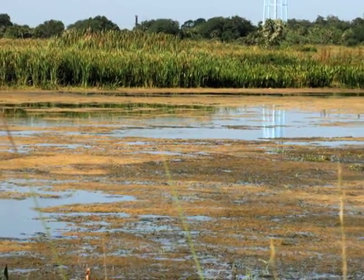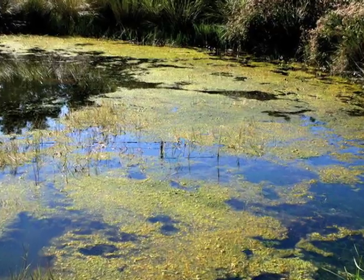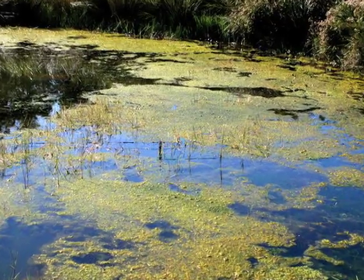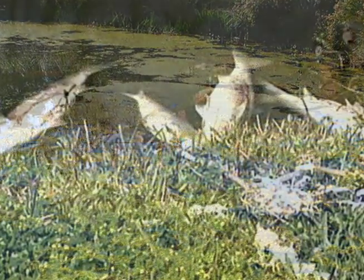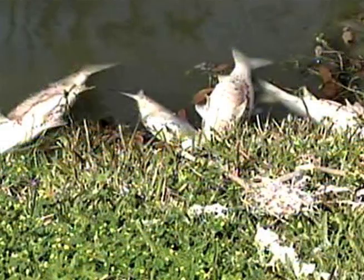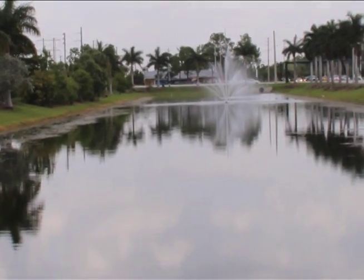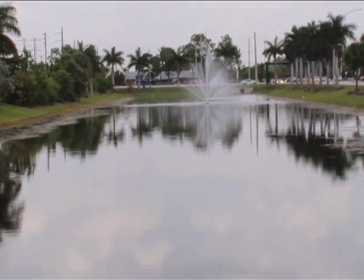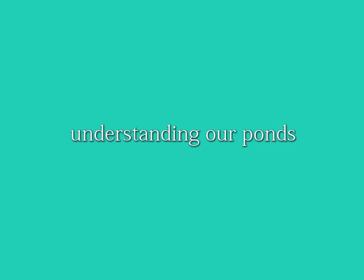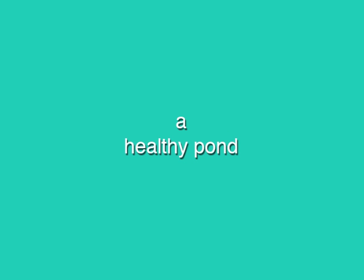People residing on some of these ponds have complained about unsightly algae blooms and dead fish floating on the surface of the water. The reality is, these ponds have become nutrient storage facilities, not nutrient removal systems. To get a better understanding of what's happening, let's start by looking at a healthy pond.